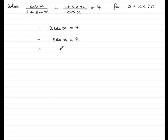And sec x is the same as 1 over cos x. So that must be equal to 2, which means that if I rearrange this for cos x, cos x is equal to 1 half.